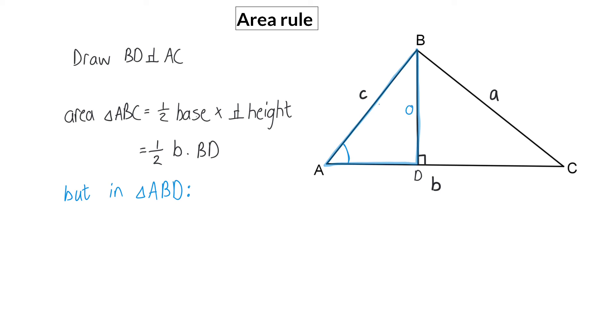and AB is the hypotenuse, which means that sin of angle A is BD over C, and that means that BD is the same as C times sin of A. If I now go and substitute this into BD's place in my area formula, I will be able to say that the area of triangle ABC is a half times B times C times sin of A, and now I've proven the area rule.